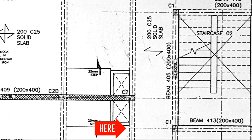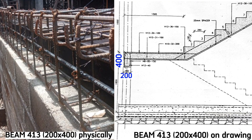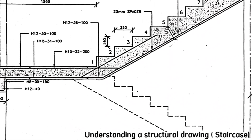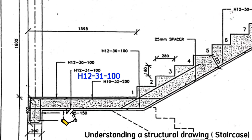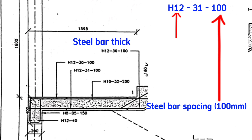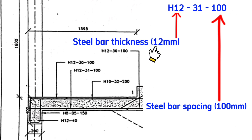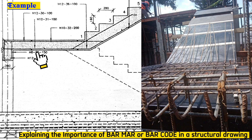The drawing tells us that the beam that connects the landing is 200 millimeters by 400 millimeters depth. Physically, this is 200 millimeters here and this is 400 millimeters here. These steel bars are supposed to be of H12, Cod 31 and spacing as 100 millimeters from one steel bar to another center to center. This H12 is the bar thickness, therefore our steel bars are of thickness 12 millimeters. This Cod 31 helps us to know where our steel bars start and end from. These steel bars of Cod 31 start from here and go up to here.